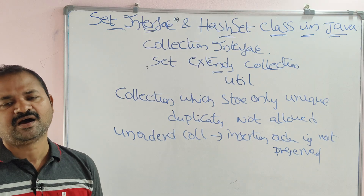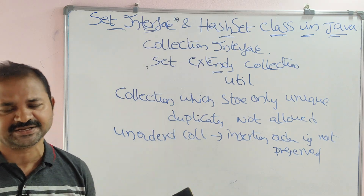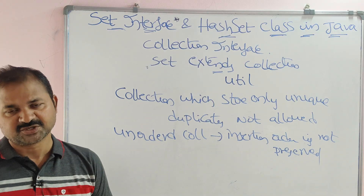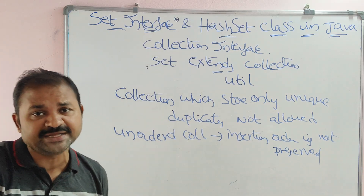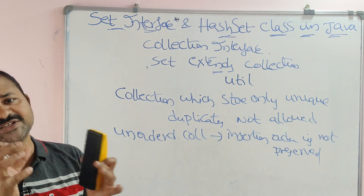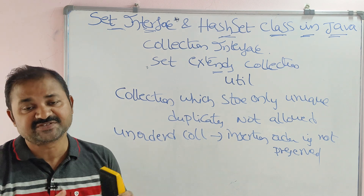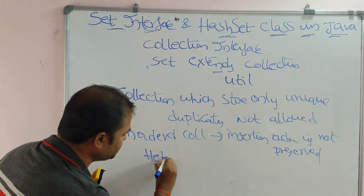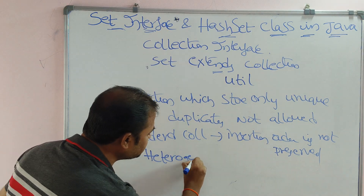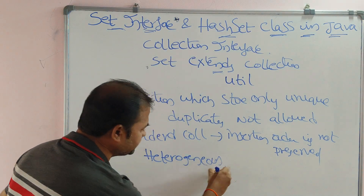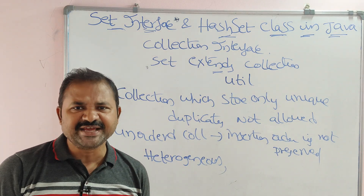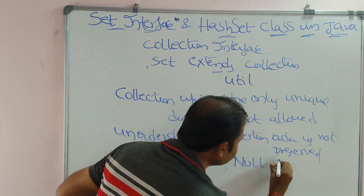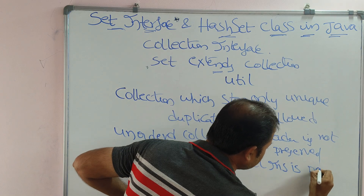For example, if elements are inserted in the order 10, 20, 30, they may be stored in some other order like 20, 30, 10 or 30, 10, 20. Insertion order is not preserved. We can also store heterogeneous elements — meaning different data types such as integers, numbers, and strings.